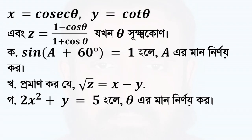The problem states: if x is equal to cos theta and y is equal to sin theta, then find j equal to 1 minus cos theta by 1 plus cos theta, given theta.